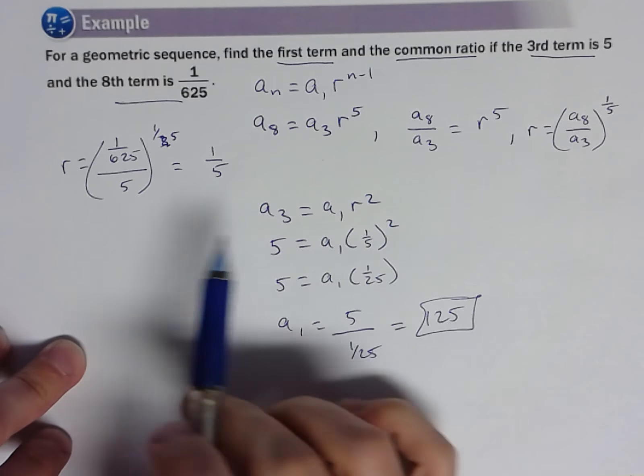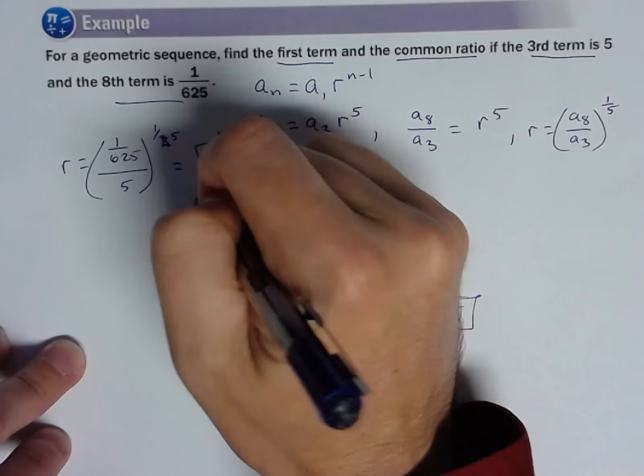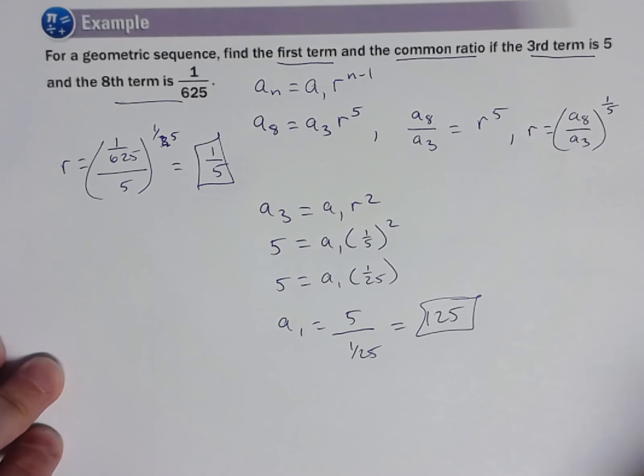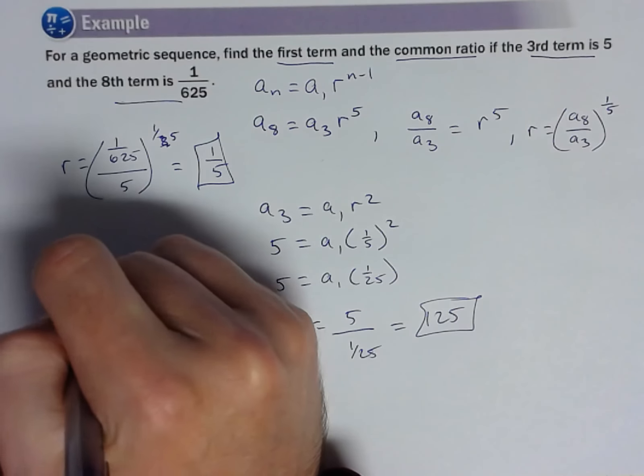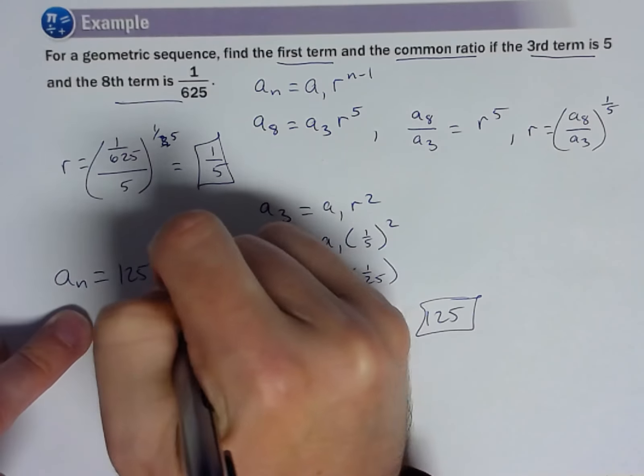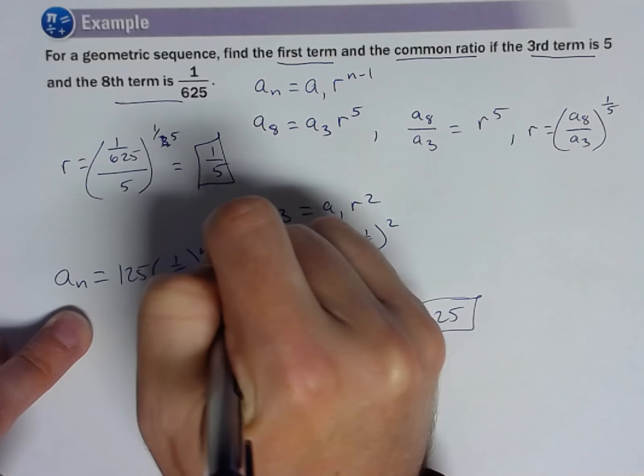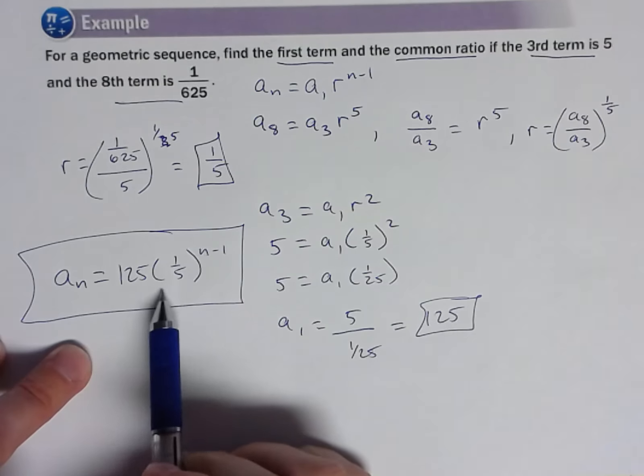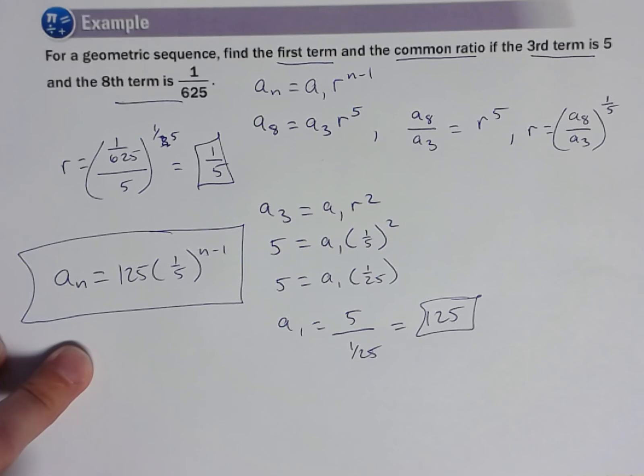So we did what they want. We've got our R. We've got our first term. And then I'm going to write it. They didn't ask me to, but I'm going to write the nth term for this one because usually we would want it. 125 times one-fifth to the n minus one. That's the nth term. Now that I've generated that, we could go and solve for anything that they could throw at us.